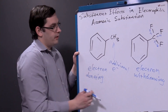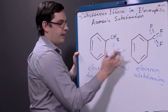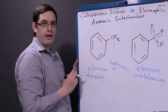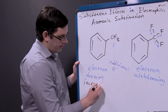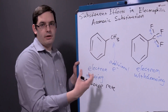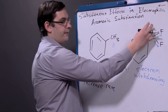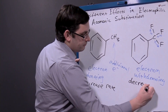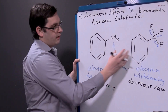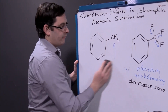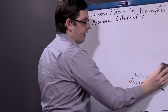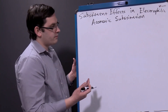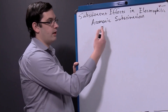Since we're either donating electrons or withdrawing electrons from our aromatic ring, we're going to affect the nucleophilic attack from our aromatic ring. In the case of our electron-donating group, since we're effectively donating additional electron density to our ring, we're going to increase the rate of the reaction because we're going to be more nucleophilic with that higher electron density. With our electron-withdrawing group, with all these electronegative fluorines pulling those electrons away, we end up decreasing the reaction rate because we have a lower electron density in our aromatic ring.